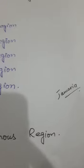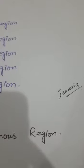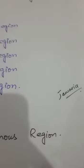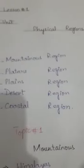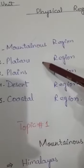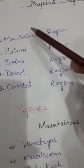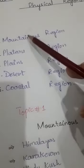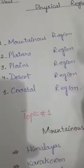Assalamu alaikum kids, how are you? Hope you all will be fine. I'm Teacher Jveria, and today we are going to discuss about the physical regions of Pakistan. There are five main regions of Pakistan: number one, mountain regions; number two, plateau; three, plains; desert; and coastal. But today we are going to discuss about the mountainous region of Pakistan. First of all, let's know about what is called a mountain — here is a definition of mountain.